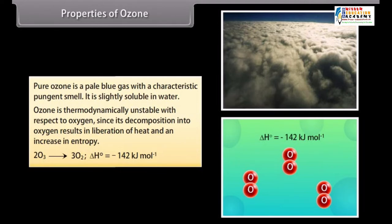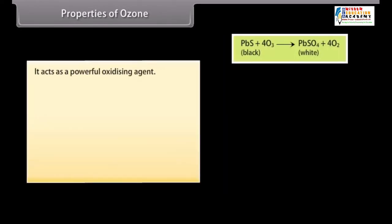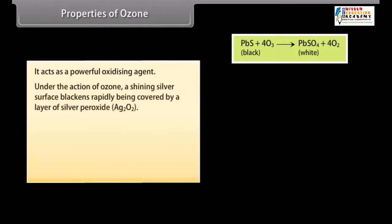Due to ease with which ozone can liberate an atom of oxygen, it acts as a powerful oxidizing agent. Under the action of ozone, a shining silver surface blackens rapidly, being covered by a layer of silver peroxide, Ag2O2.